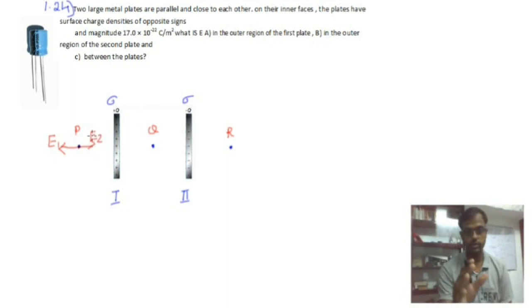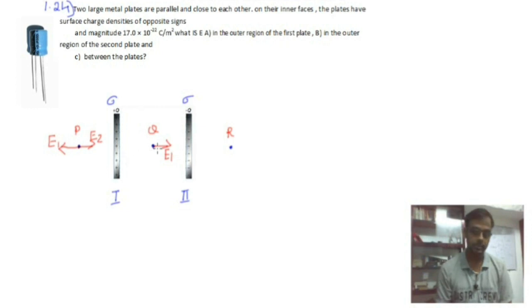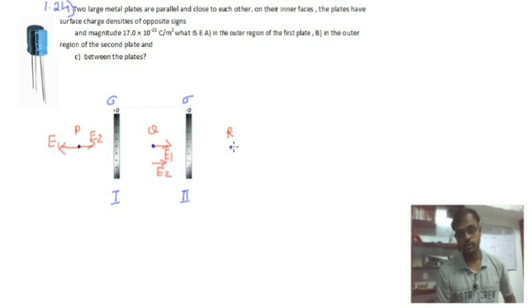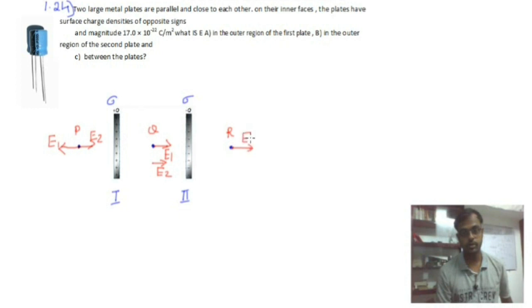Now let's move to the midpoint. What is the electric field at point Q due to the first plate? It is positively charged, so E1 points to the right. At the same point Q, due to the second negatively charged plate, E2 also points to the right. Now at point R, the right side of the second plate, E1 due to the first plate points to the right, and E2 due to the second plate points in the opposite direction — to the left.